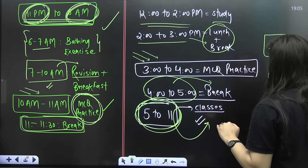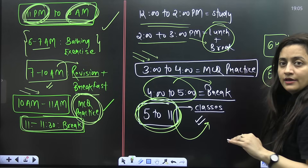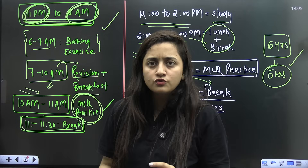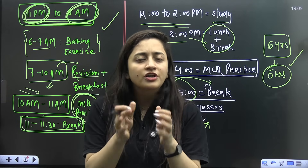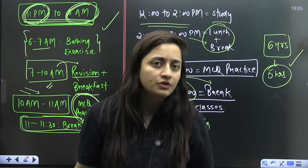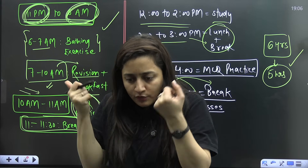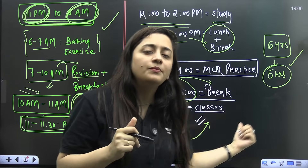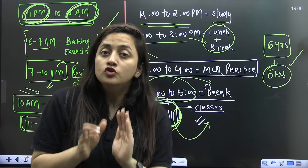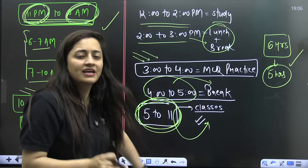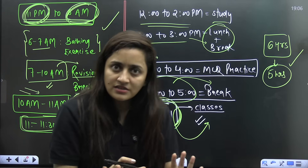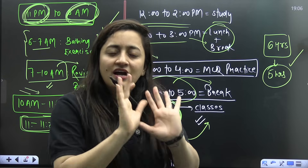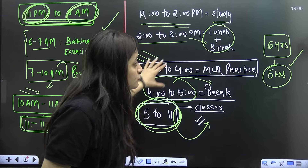Even after six hours of classes, there are five hours for self-study and revision. Right now you're just completing your syllabus. Don't try to study 12 to 14 hours a day — you won't be able to maintain that routine for a longer period. It's good to sleep six or seven hours, but not more than eight. Seven hours of sleep is ideal; the rest is for studying.